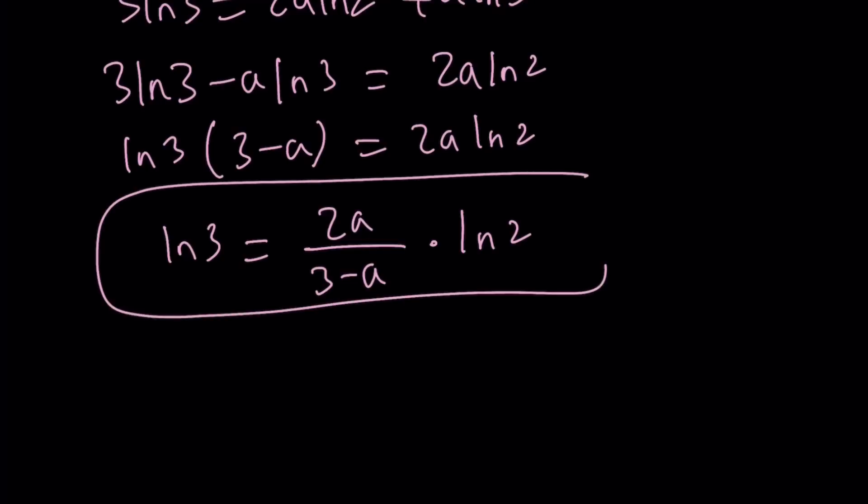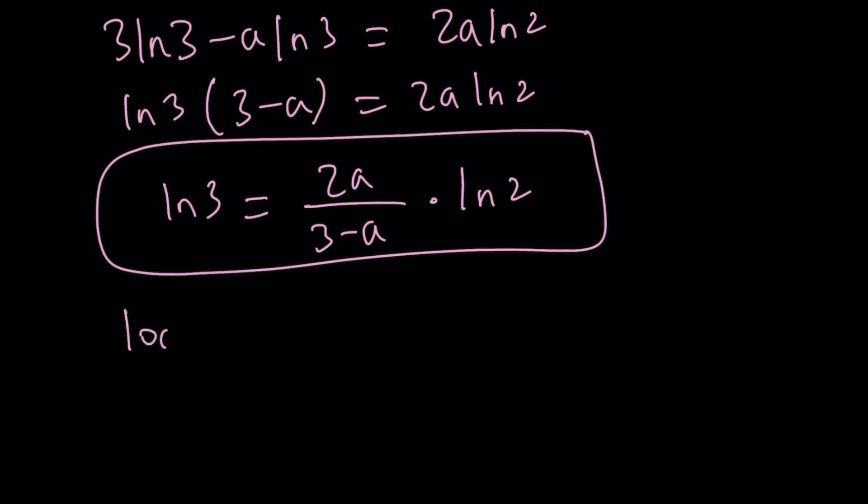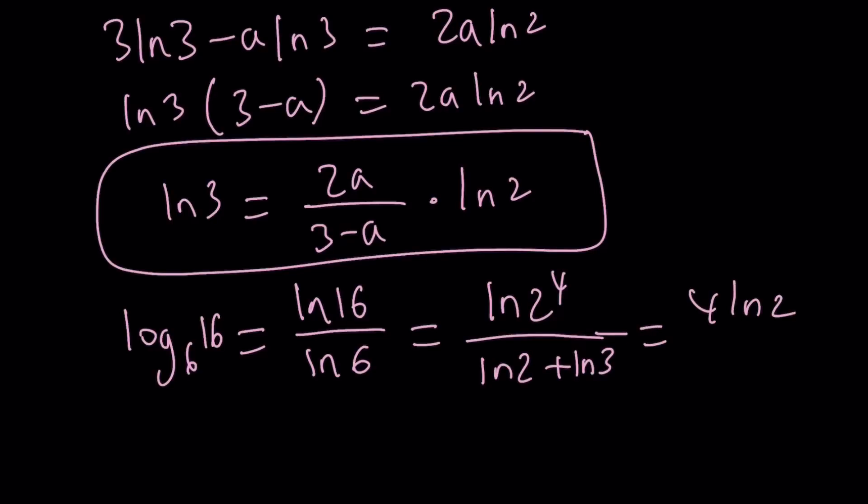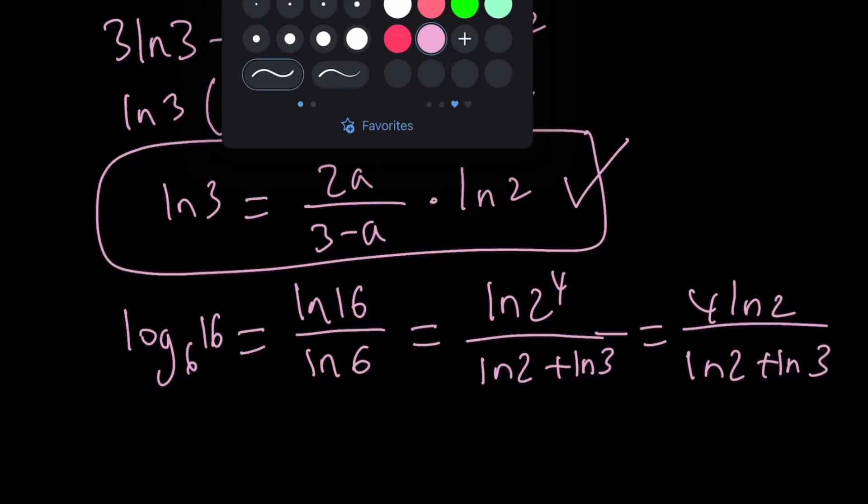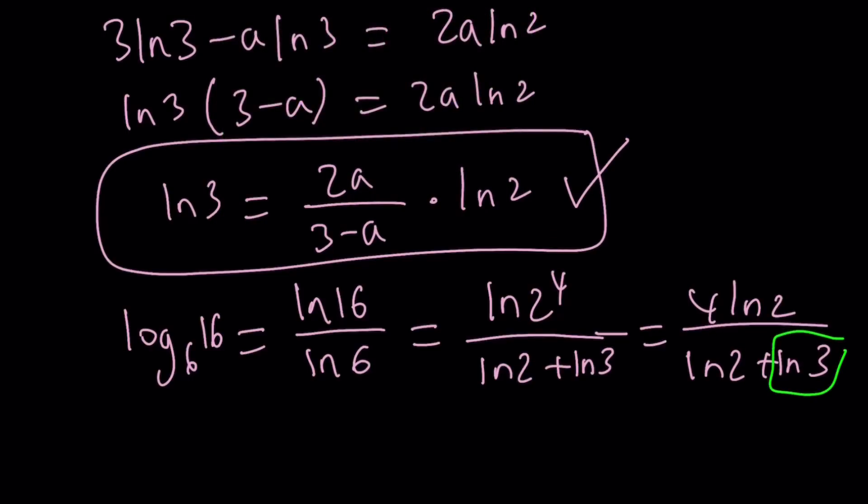So now we're going to use this expression in the second equation. What is the second one? It is log 16 with base 6. And I can just write it as ln 16 over ln 6 by change of base again. But this is ln 2 to the 4th and this is ln 2 plus ln 3 because 2 times 3 is 6. And this is 4 ln 2 over ln 2 plus ln 3. Awesome. Now this is what I have and this is what I have. What can I do? I can replace ln 3 with something. I can just go ahead and plug it in.